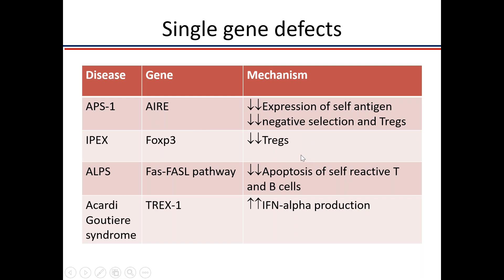If you have a deficiency of FOXP3, T regulatory cells don't form, so there is no peripheral regulation of tolerance. These children present within the first month of life. FOXP3 is located on the X chromosome, so it presents in boys with severe diarrhea, type 1 diabetes, and polyendocrinopathy — the syndrome called IPEX: Immune dysregulation, Polyendocrinopathy, Enteropathy, X-linked. If there are defects in the apoptosis machinery, self-reactive T and B cells accumulate, and these patients present with massive lymphadenopathy, hepatosplenomegaly, and autoantibodies — a picture resembling lupus with lymphocyte proliferation everywhere. This is ALPS.